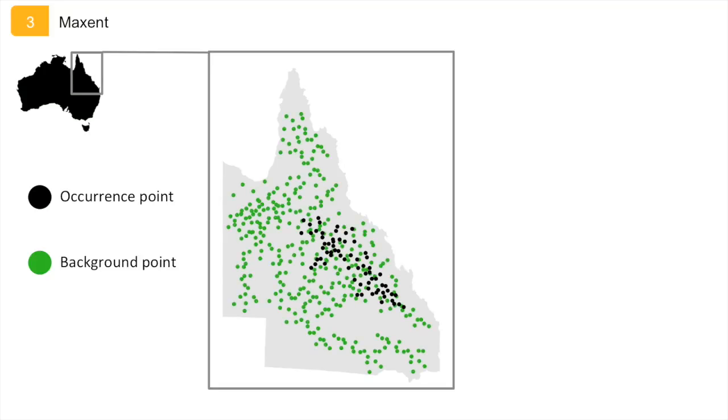These points are called background points. Because background points can include locations where the species is known to occur, background points are not the same as pseudo-absence points. Background points define the available environment.